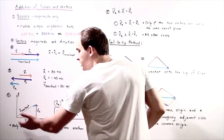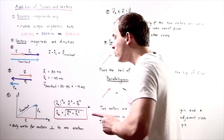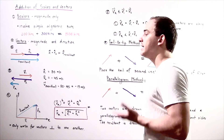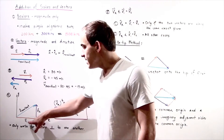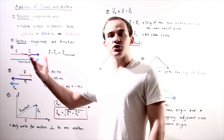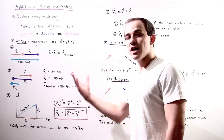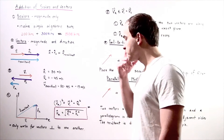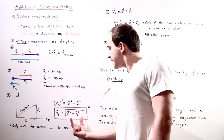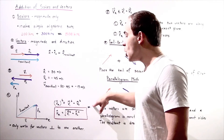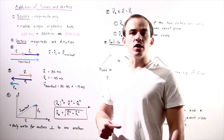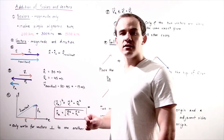Essentially what we did is construct a triangle. We can use the Pythagorean theorem — a² + b² = c² — to find the resultant. Here, a is vector 1, b is vector 2, and c is the resultant vector. So the resultant squared equals vector 1 squared plus vector 2 squared, and taking the square root of both sides gives us our formula. Note that this formula only works for vectors that are perpendicular to one another — at a 90-degree angle.